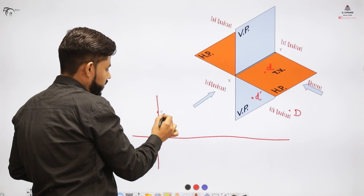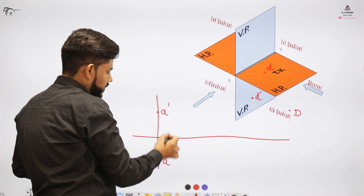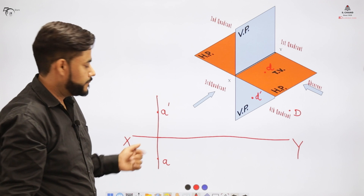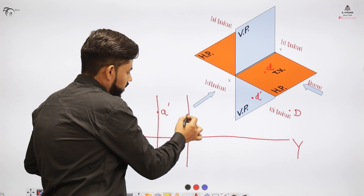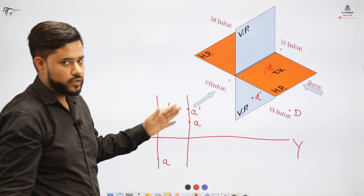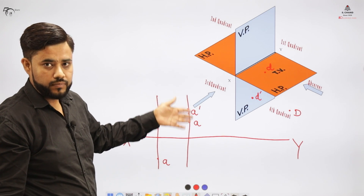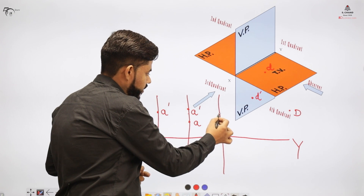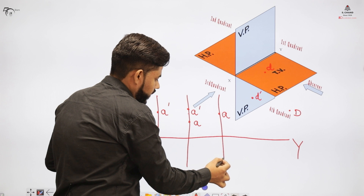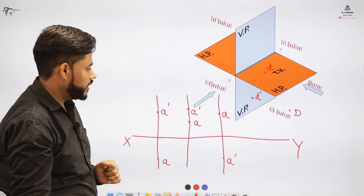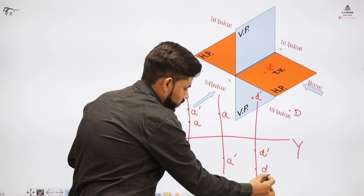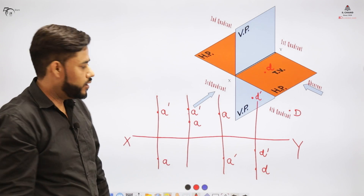Compiling all four cases: in the first quadrant, the front view is above the XY line and the top view is below it. In the second quadrant, both the front view and top view are above the XY line. In the third quadrant — opposite to the first — the top view is above and the front view is below the XY line. In the fourth quadrant, both the front view and top view are below the XY line.